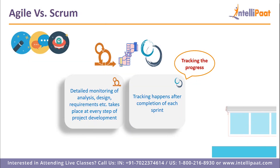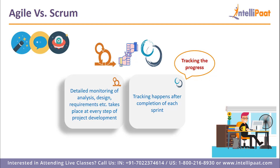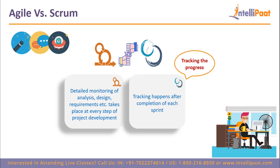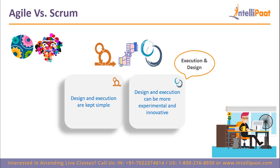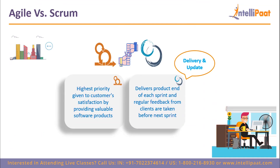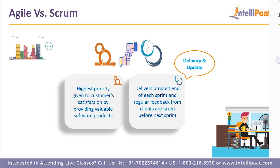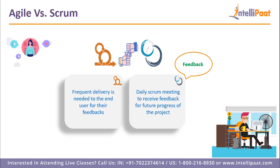Next parameter: tracking progress. In Agile, detailed monitoring of analysis, design requirements, etc. takes place at every step of project development. In Scrum, tracking happens after completion of each sprint, and constant feedback can be taken before further sprints. The seventh parameter is execution and design. In Agile, design and execution are kept mostly simple. In Scrum, design and execution can be more experimental and innovative. Next: delivery and update. In Agile methodology, the highest priority is always given to customer satisfaction through constant delivery of valuable software. Scrum delivers the product at the end of each sprint and takes regular feedback from clients before the next sprint. The last parameter is feedback. In Agile, frequent delivery is needed to end users for their feedback and comments. In Scrum, a daily Scrum meeting is arranged to receive feedback and review for future progress of software development.